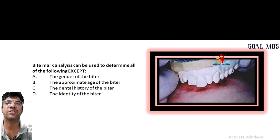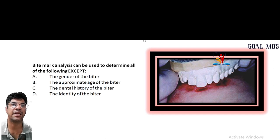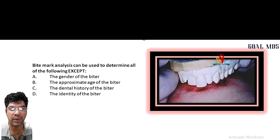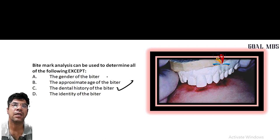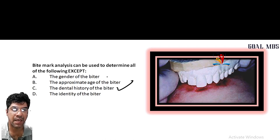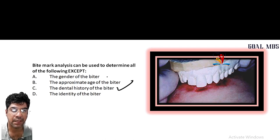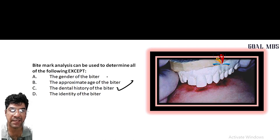Moving to the next question: bite mark analysis can be used to determine all of the following EXCEPT the dental history of the biter. The first option — gender of the biter — in some cases bite mark analysis may provide clues about gender, such as the size and shape of dental arches or spacing of teeth.